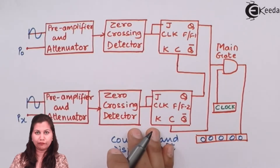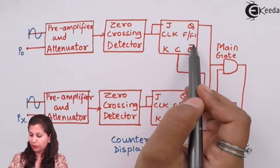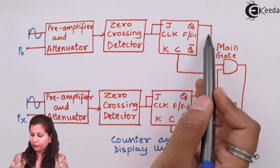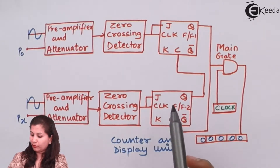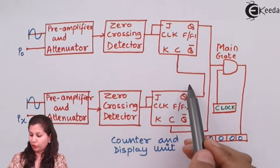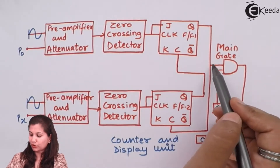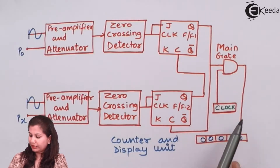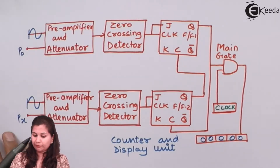After the zero crossing detectors, we have two JK flip-flops. In each JK flip-flop we have input J, outputs Q and Q-bar, a clear signal C, and a clock signal CLK. The output of the first flip-flop is connected to the clear signal of the second JK flip-flop, and the output of the second flip-flop is connected to the clear signal of the first. The output of the first flip-flop also connects to the main AND gate, whose second input is the clock. The output of this gate feeds the counter and display unit, where the phase difference is displayed.